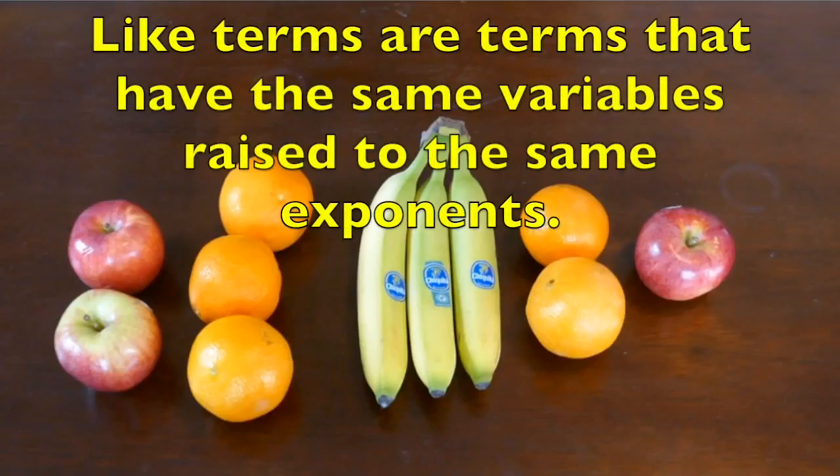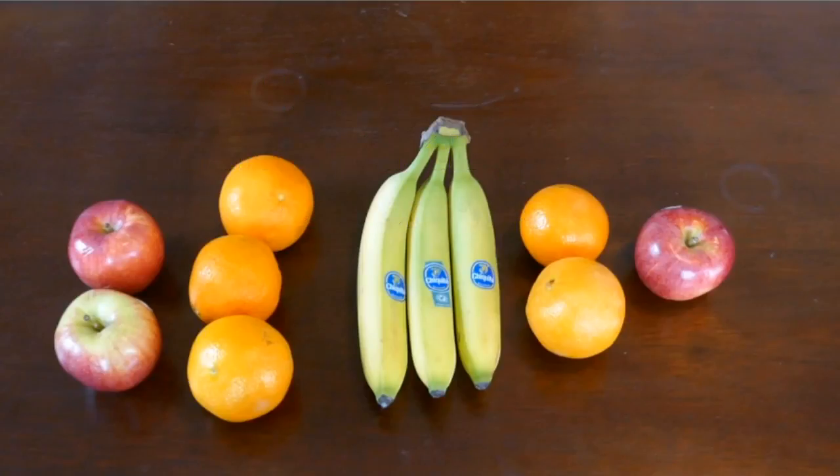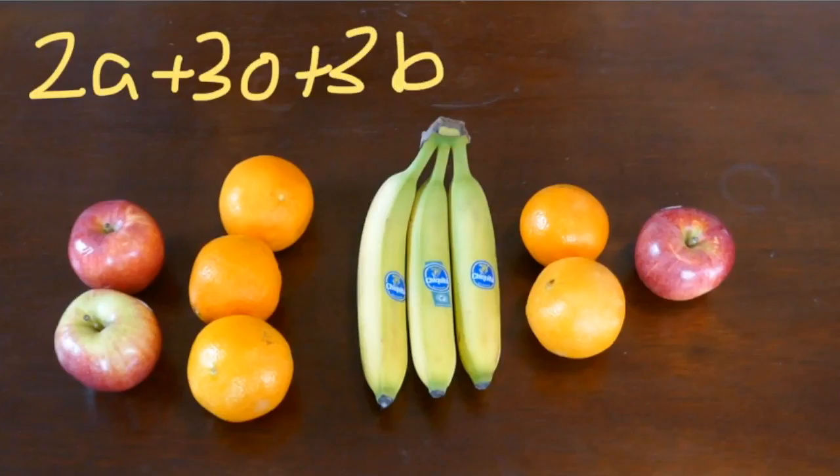Like terms are terms that have the same variables raised to the same exponents. So here you can clearly see that we have some groups that should be going together, and those would be like terms.